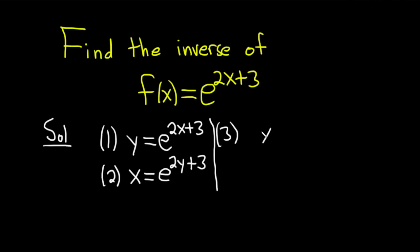So basically, I'll write it again. x equals e to 2y plus 3. And because the y is up here, in order to bring it down, we have to take the natural log of both sides. So I'll put an ln here and an ln here.